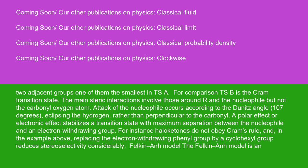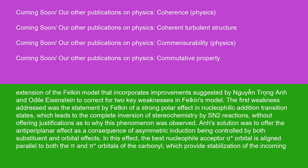The Anh-On model is an extension of the Felkin model that incorporates improvements suggested by Nguyen Trong Anh and Odile Eisenstein to correct for two key weaknesses in Felkin's model. The first weakness addressed was the statement by Felkin of a strong polar effect in nucleophilic addition transition states, which leads to the complete inversion of stereochemistry by SN2 reactions, without offering justification as to why this phenomenon was observed. Anh's solution was to offer the endo-para-planar effect as a consequence of asymmetric induction being controlled by both substituent and orbital effects.